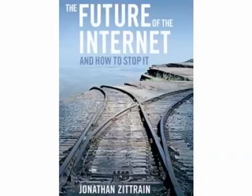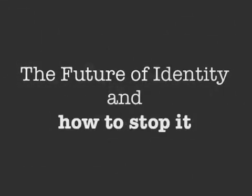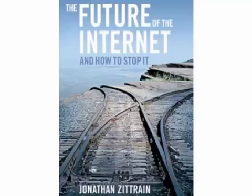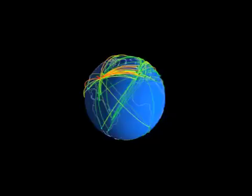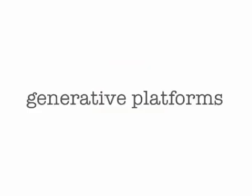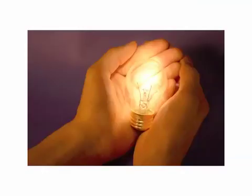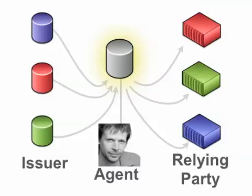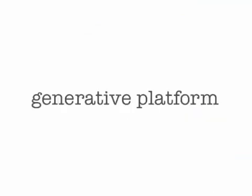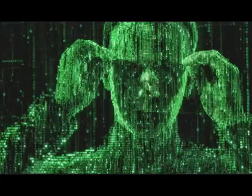Jonathan Zittrain recently released the book The Future of the Internet and How to Stop It. While reading it, I got thinking about the future of identity and how to stop it. In Jonathan's book, he talks about how the Internet and the PC are these generative platforms that enable all kinds of rich innovation — things people had never envisioned before. I see the same thing being possible with user-centric architectures: it's a generative platform that enables these deep, rich digital personas.